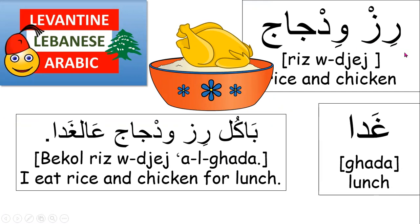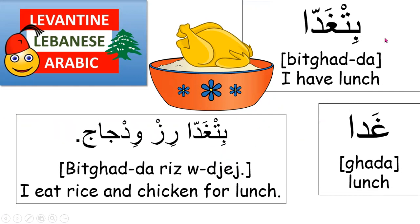Riz with jaj, for example, means rice and chicken. Ghada is lunch. Baykul riz with jaj al ghada means I eat rice and chicken for lunch. Notice we use the b prefix because it's something I routinely or habitually do. Bitghada is the verb that describes having lunch. Bitghada riz with jaj means I eat rice and chicken for lunch.